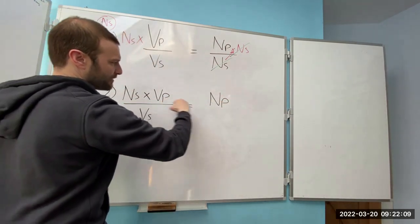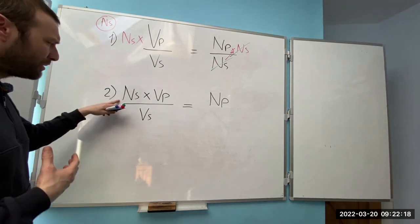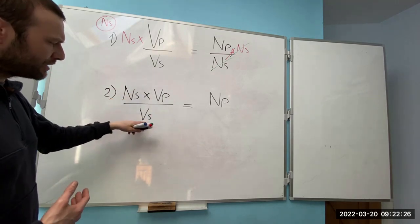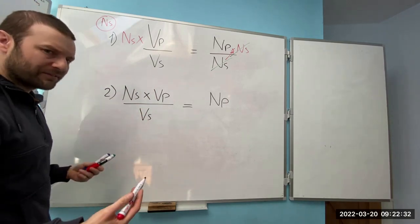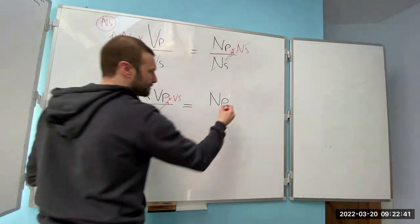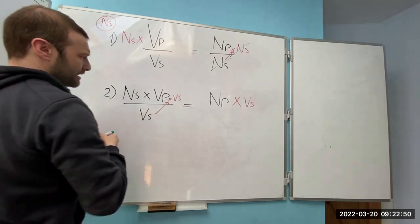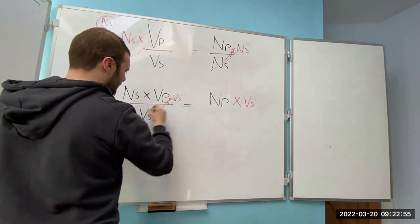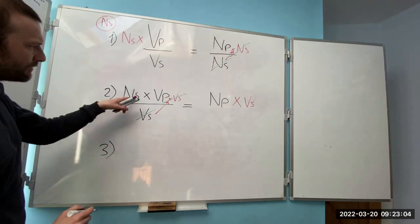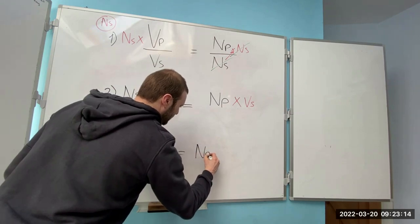We're looking for Ns and I've got Ns over here, but I still don't have it by itself. I can't do anything with Ns until I've dealt with Vs, because it's still a fraction. So I need to move Vs up — the opposite of divide is times, so I times Vs out. Whatever I do this side, I do the other side. Then I clean the formula up and go to Step 3: Ns times Vp equals Np times Vs.